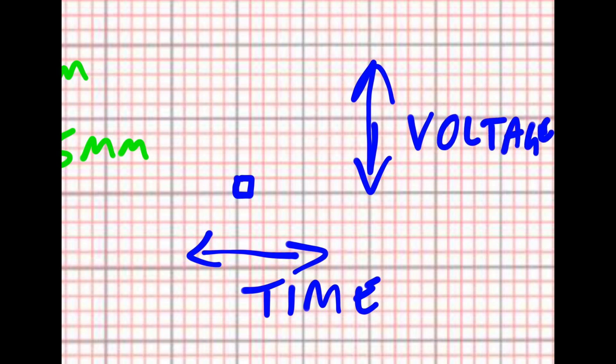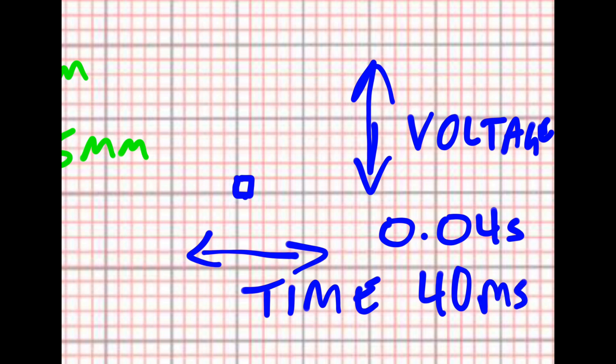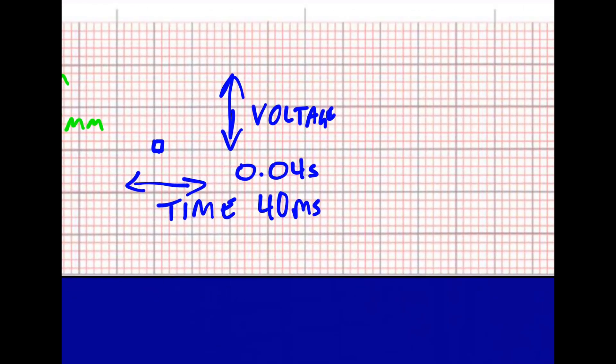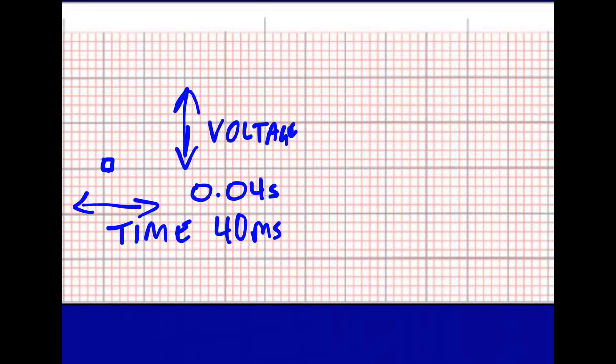So in time, one small box is 0.04 seconds or 40 milliseconds. With that said, since the large box is five small boxes by five small boxes, then we know that five small boxes or one large box in length is going to be 0.20 seconds or 200 milliseconds.